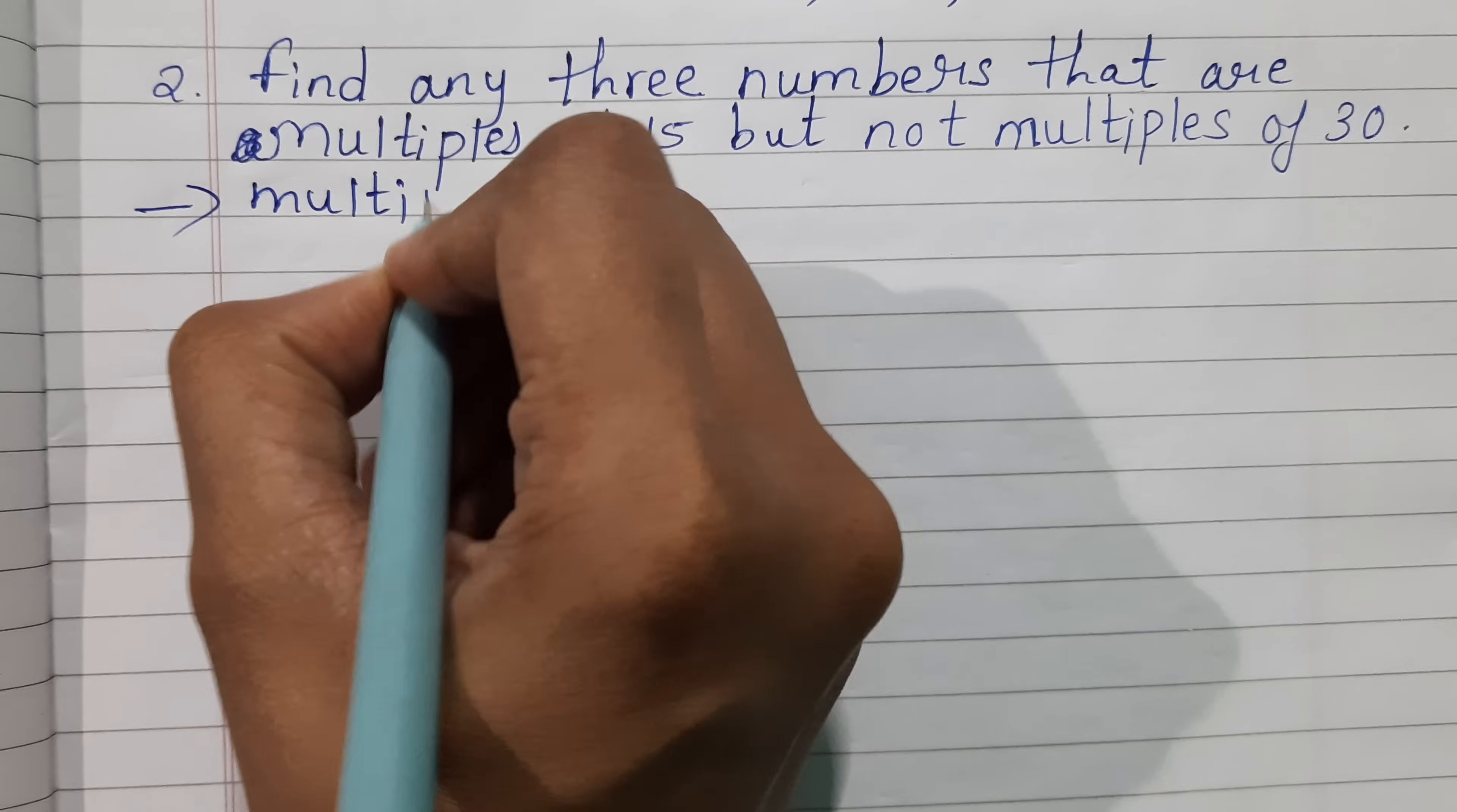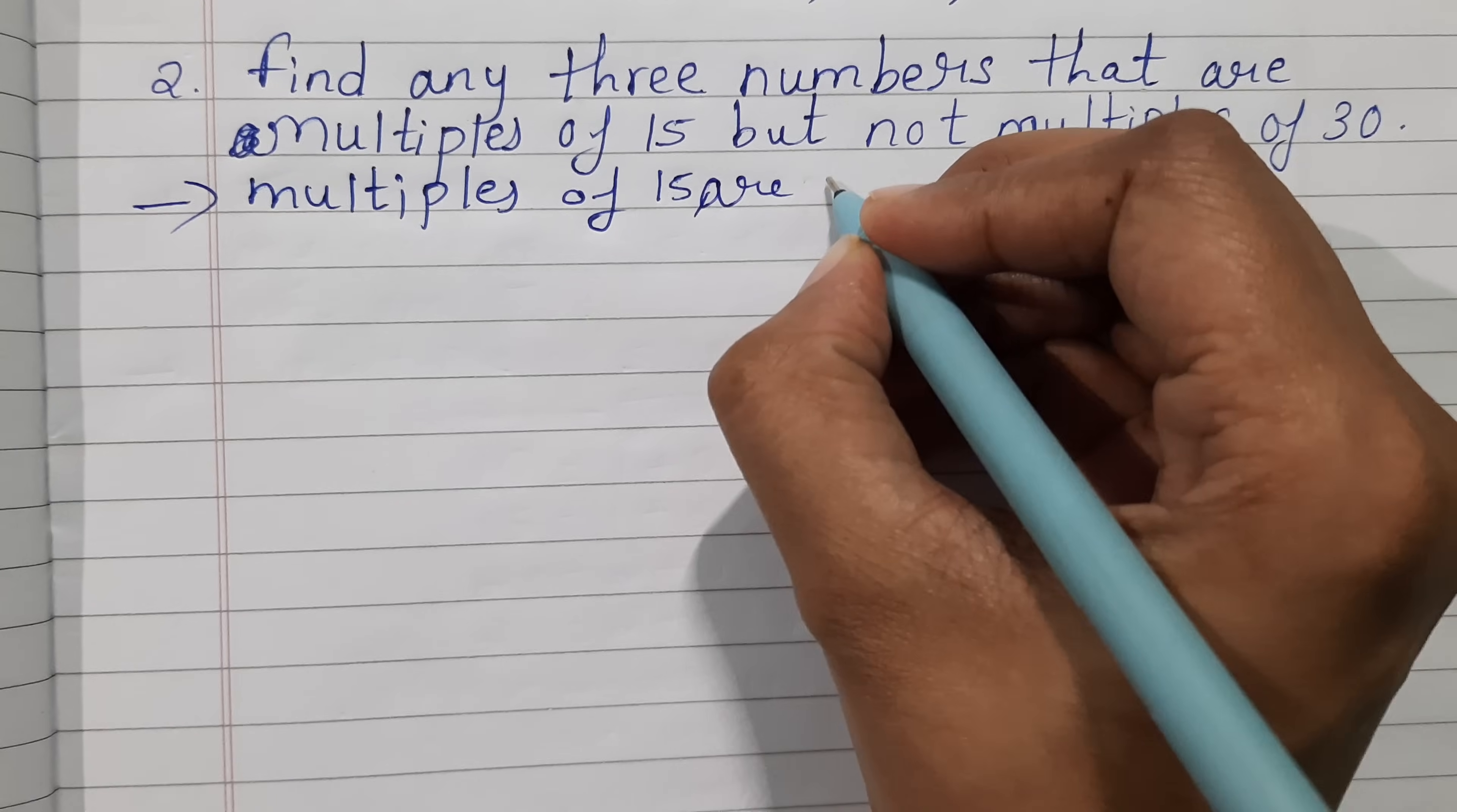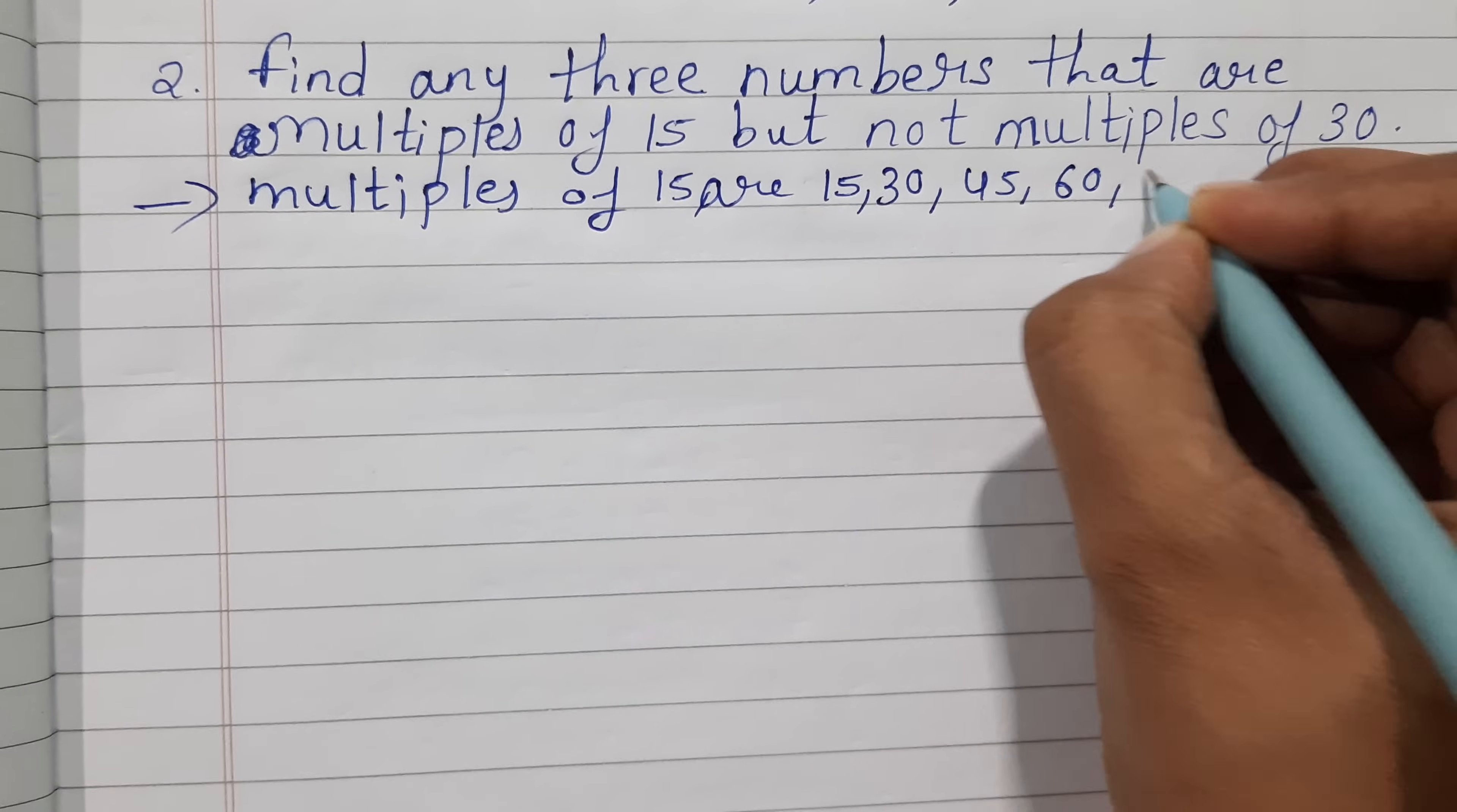Multiples of 15 - let us write down the multiples of 15. What are the multiples of 15? 15×1=15, 15×2=30, 15×3=45, 15×4=60, 15×5=75.